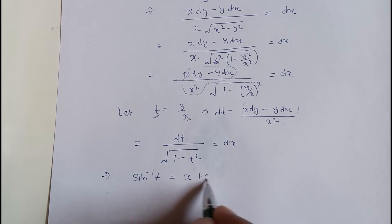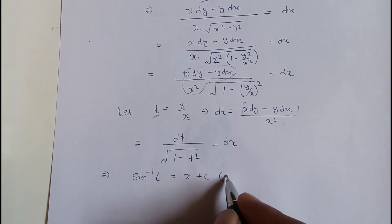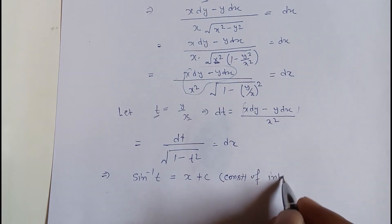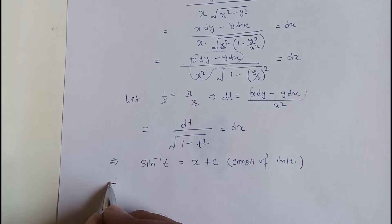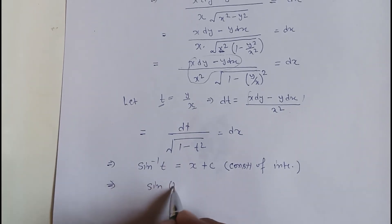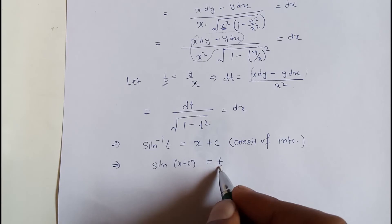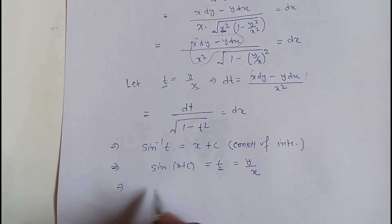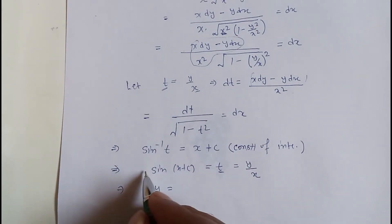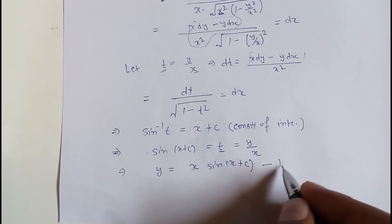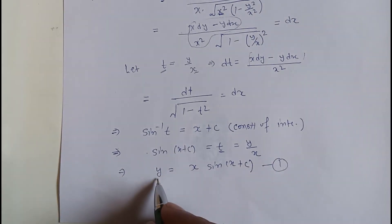Integrating both sides: sin⁻¹(t) = x + c, where c is the constant of integration. Since t = y/x, we get sin⁻¹(y/x) = x + c, so sin(x + c) = y/x, giving the general solution y = x·sin(x + c) — call this equation (1).